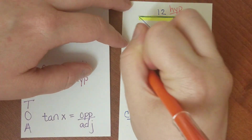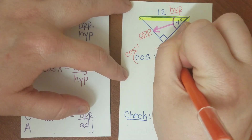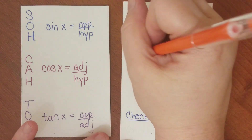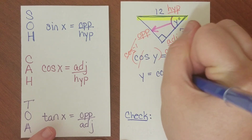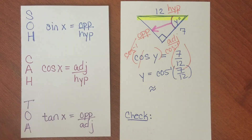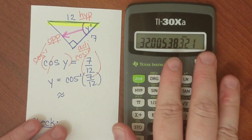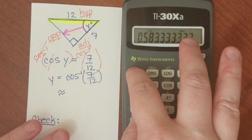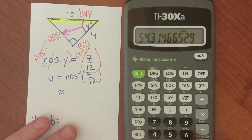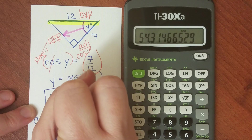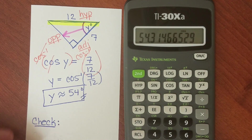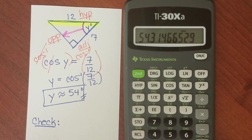To get rid of cosine, I'm going to take the inverse cosine of both sides, and these are going to undo each other. I'm going to be left with y equal to the cosine inverse of 7 over 12. Plugging that into my calculator: 7 divided by 12, cosine inverse, and that's going to be about 54 degrees if I round to the nearest whole number. As a general rule with significant figures, you can only be as accurate as your least accurate number. If your directions tell you to round to the nearest tenth or hundredth, follow those instructions so you don't lose points.